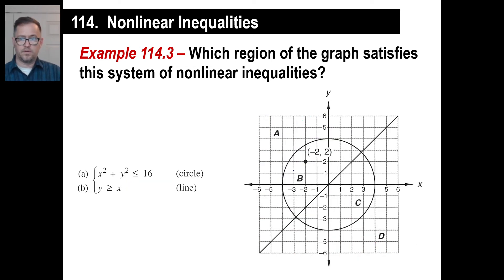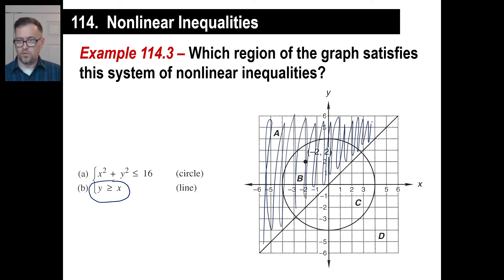Let's look at another one. Which region satisfies this system? The line, this is a pretty easy line. Y is greater than or equal to x. In other words, that's a one, that's a zero. So greater than or equal to will be everything here, including the line itself because it is equal to. So there's everything there.